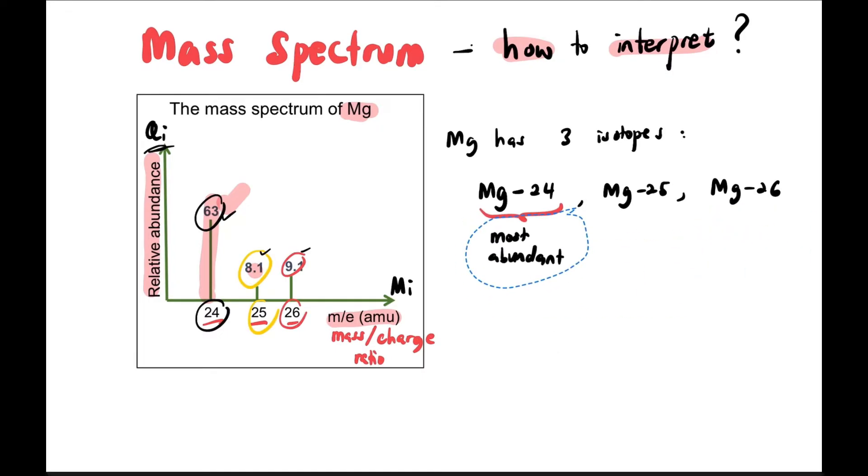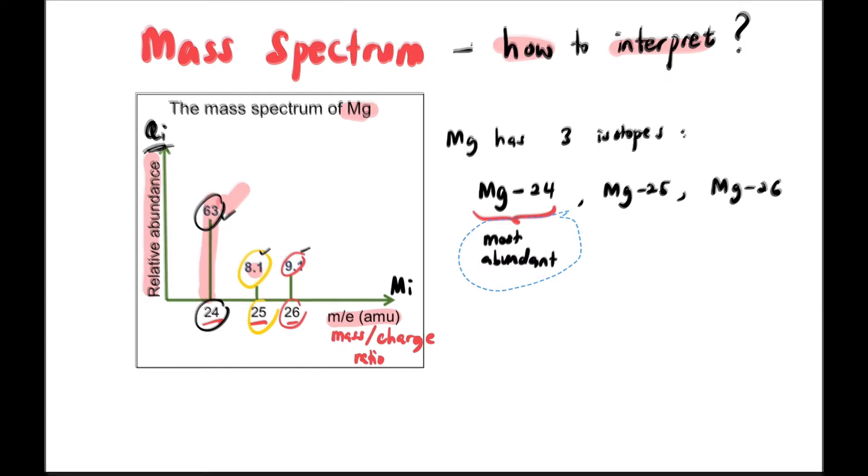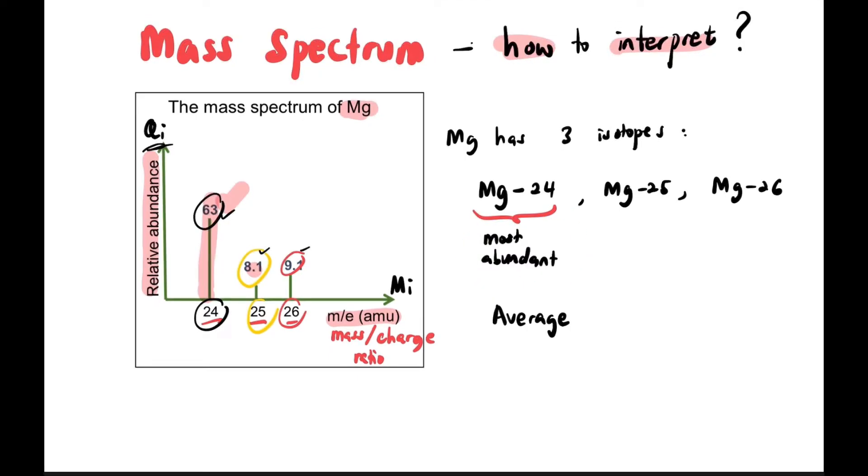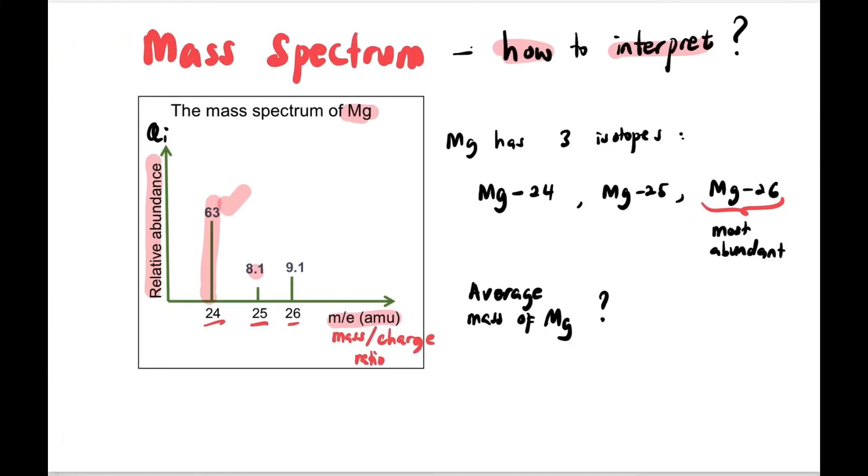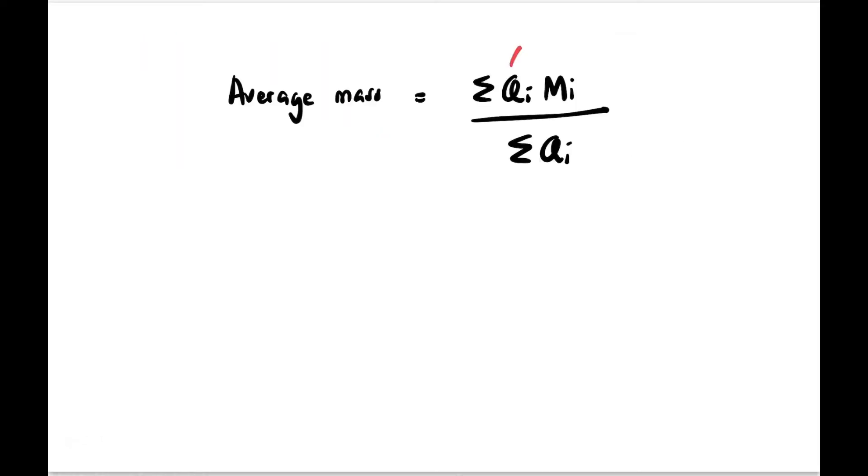By the way, relative abundance can be symbolized as qi and mass we call mi. Using these two pieces of information we can find average atomic mass. The formula for average mass is sum of qi times mi divided by sum of qi, where q is abundance, m is mass, and i is the isotope.